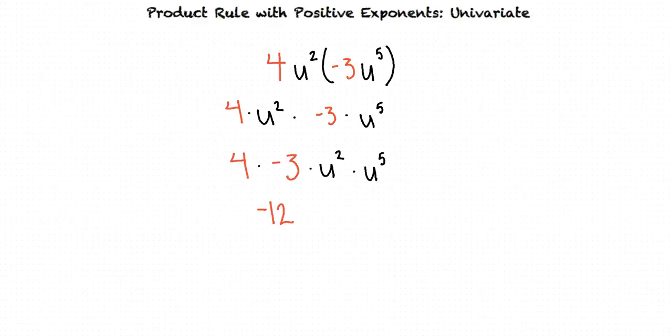To multiply two factors with the same base but different exponents like u squared and u to the fifth power, we can keep the same base and add the exponents together, right? Right! We can use the product rule of exponents to add the exponents of u like this. 2 plus 5 is 7, so this factor becomes u raised to the seventh.